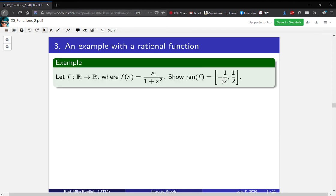Let's see an example of this with a rational function, using that proof strategy. We'll see that inequalities show up, and so do other things like the quadratic equation. So let f : R → R be defined by f(x) = x/(1 + x²). Show that the range of f is [-1/2, 1/2].